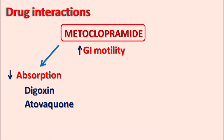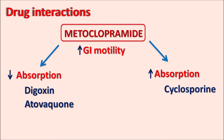Conversely, metoclopramide can increase the absorption of drugs whose absorption is enhanced by GI motility. For example, the immunosuppressants cyclosporine and tacrolimus have increased absorption when metoclopramide is given.